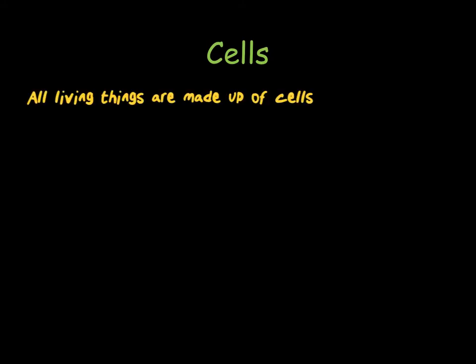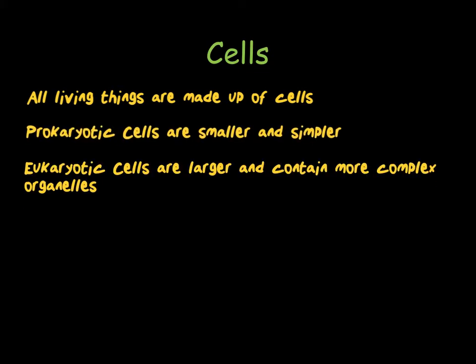So, what are cells? All living things are made up of cells. These can be either eukaryotic or prokaryotic. Prokaryotic cells are much smaller and simpler — for example, bacteria. Eukaryotic cells, such as animal and plant cells, are much more complex and include far more organelles.